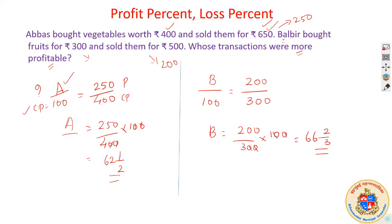Now the question is whose transactions were more profitable? Balbir got 66-plus rupees profit per 100, and Abbas is getting only 62. So even though earlier it looked like Abbas was getting more money, Abbas invested more money also. Always the percent of profit and percent of loss should be on cost price — how much you invested. So always the formula will be connecting to the cost price. Balbir's transactions were more profitable, because 66 and 2/3 is more than 62 and 1/2.